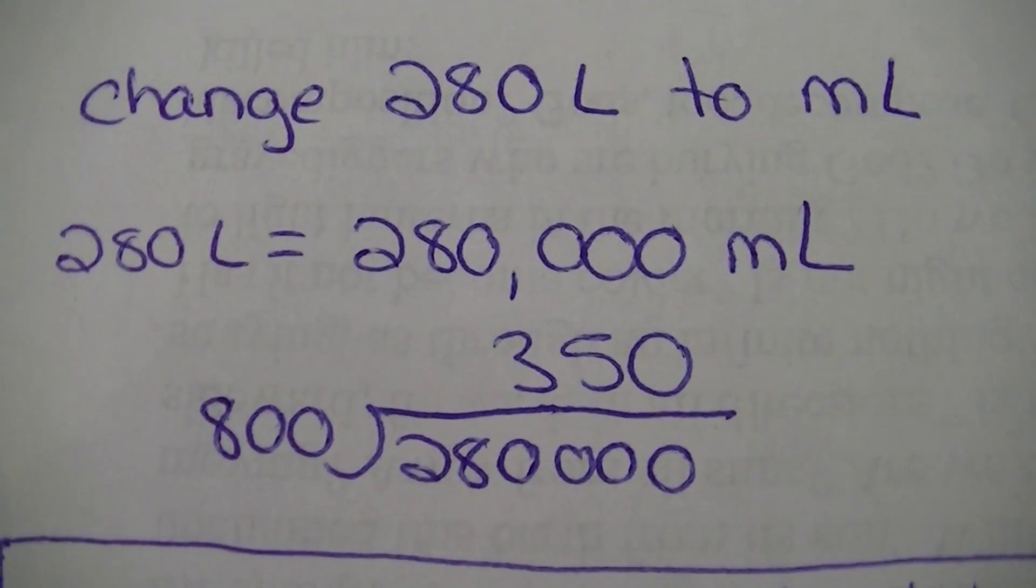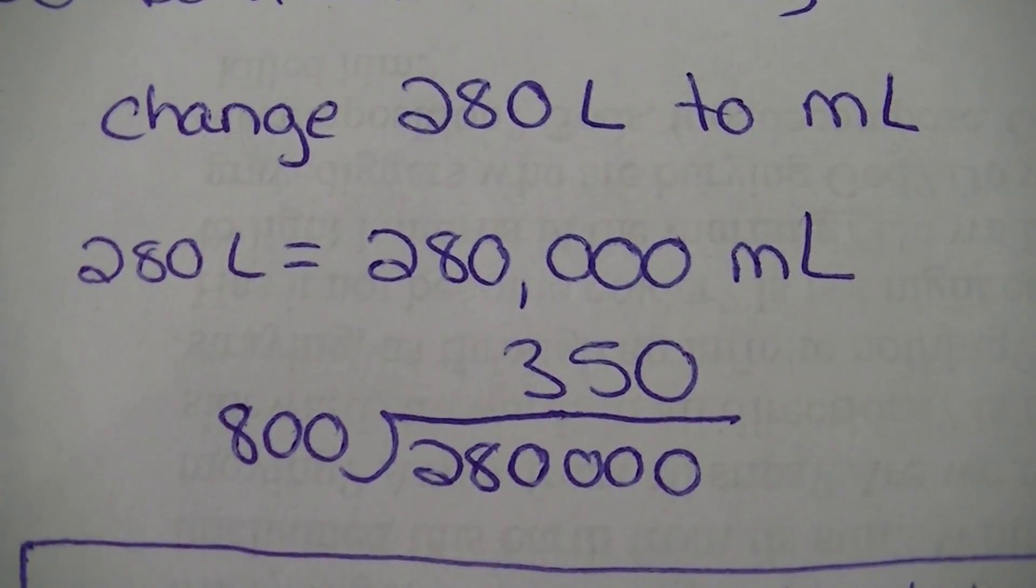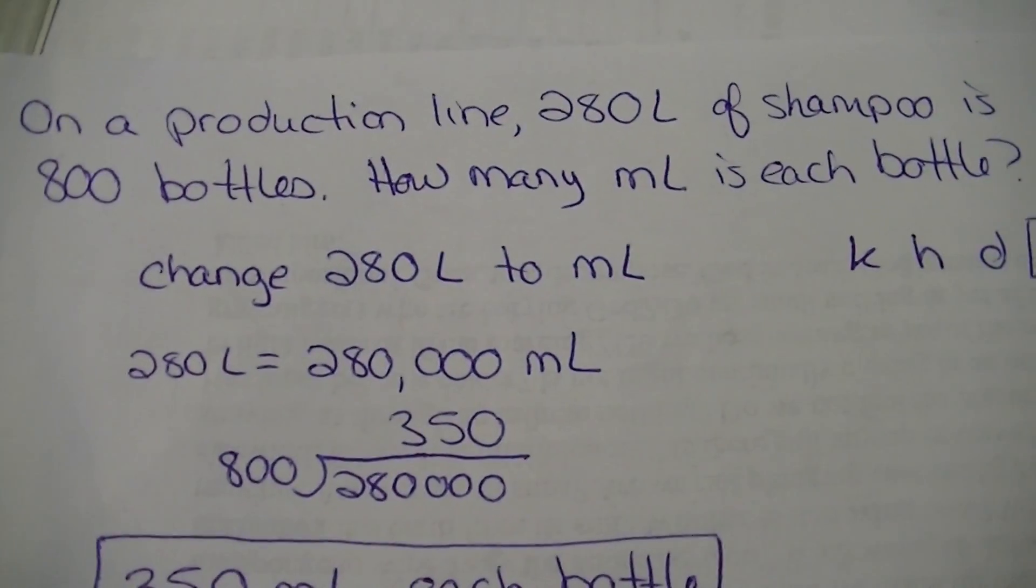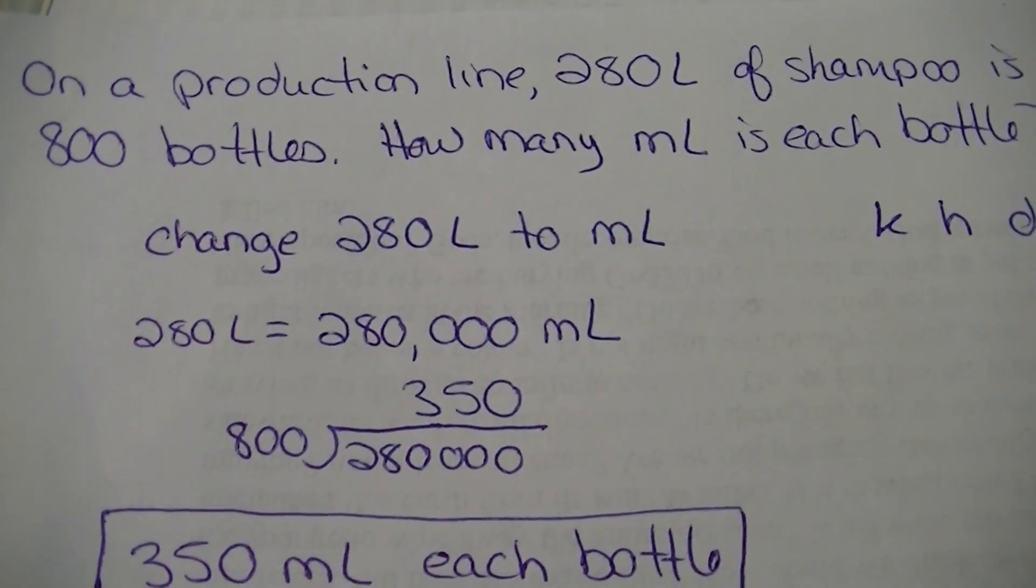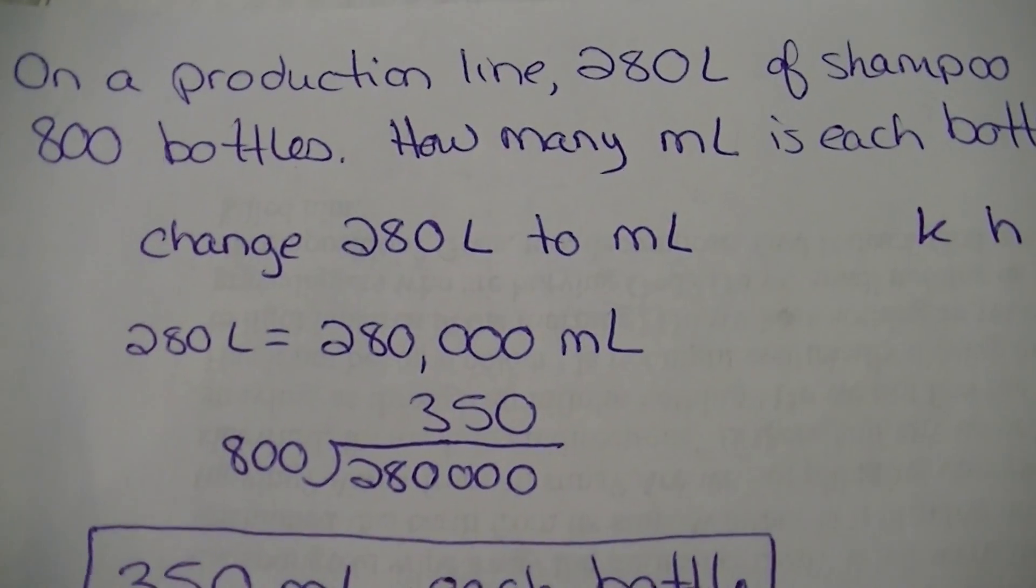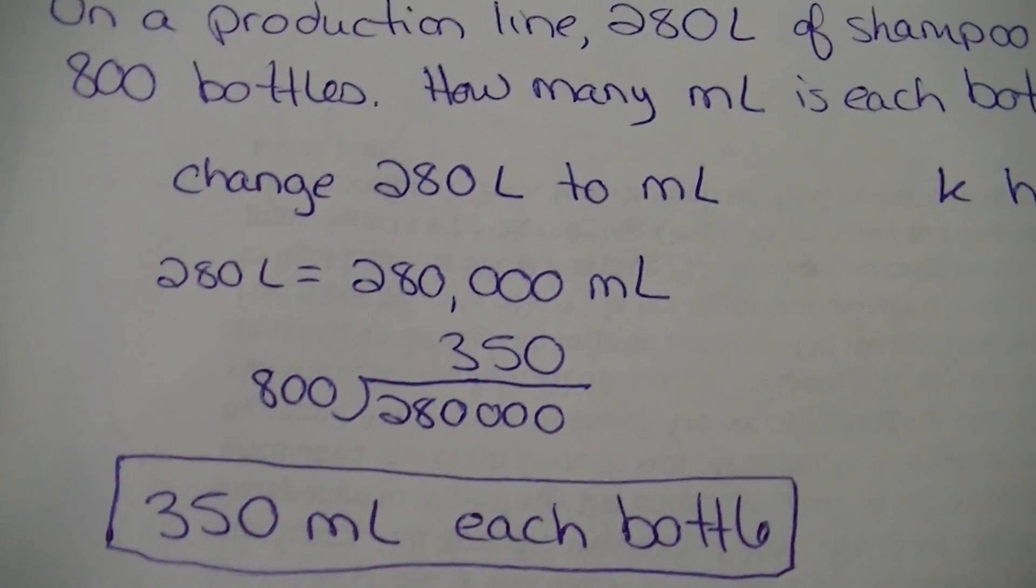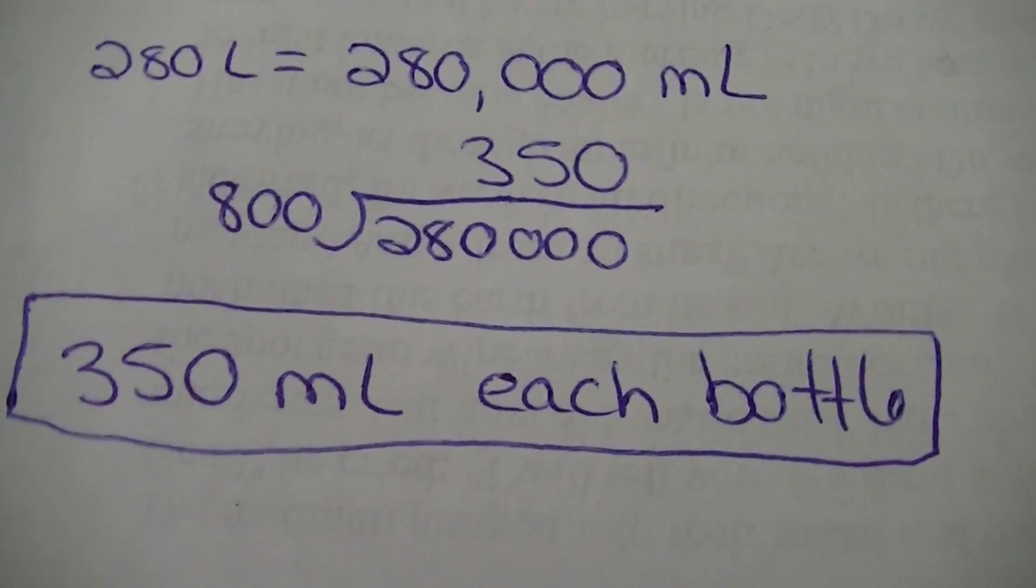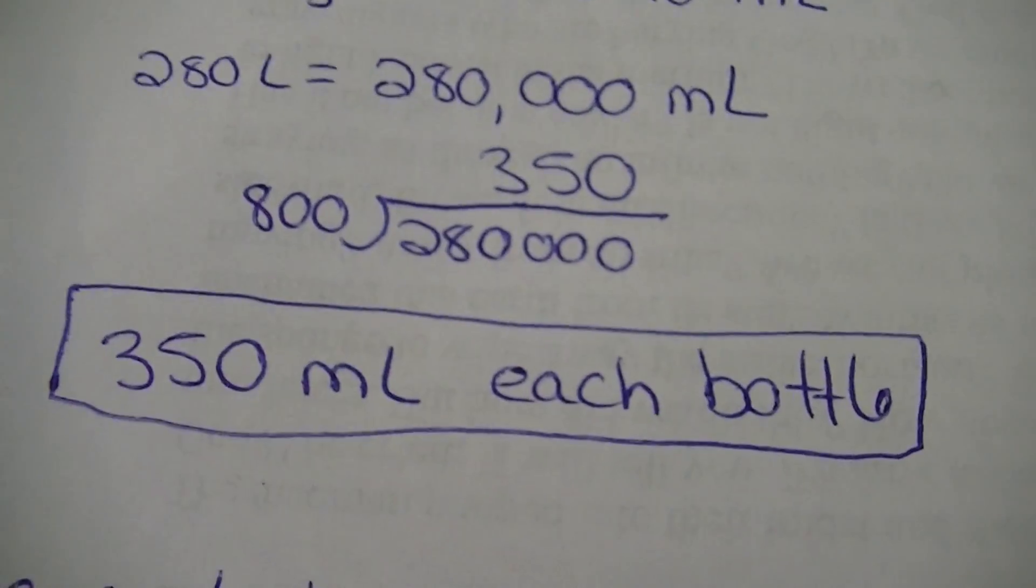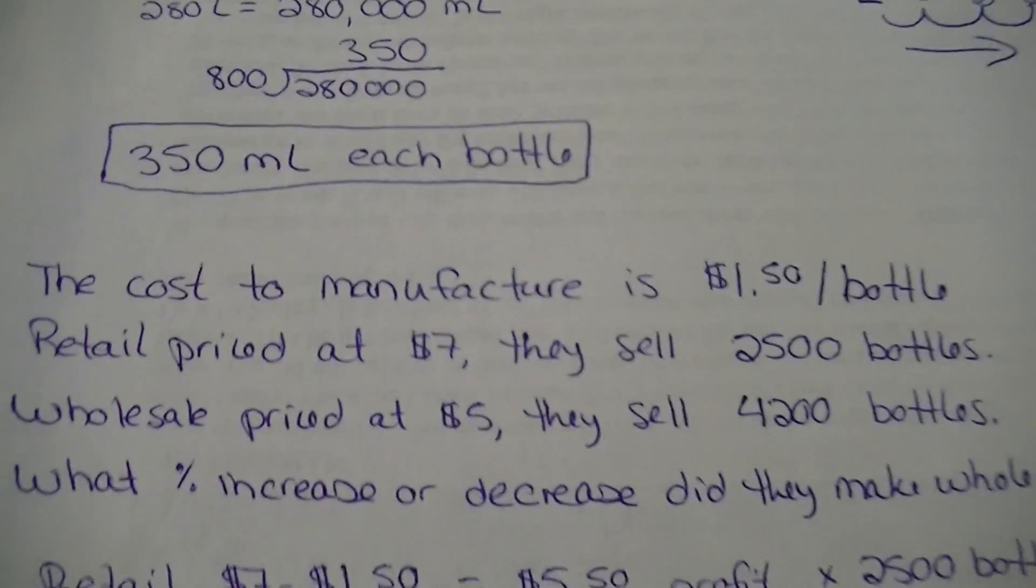So I want to know how many is in each bottle, right? And we said it was a total of 800 bottles. So I'm going to take my 800 and divide it into 280,000. I get 350. So there's 350 milliliters in each bottle. And you might think that's where we're stopping, but no.